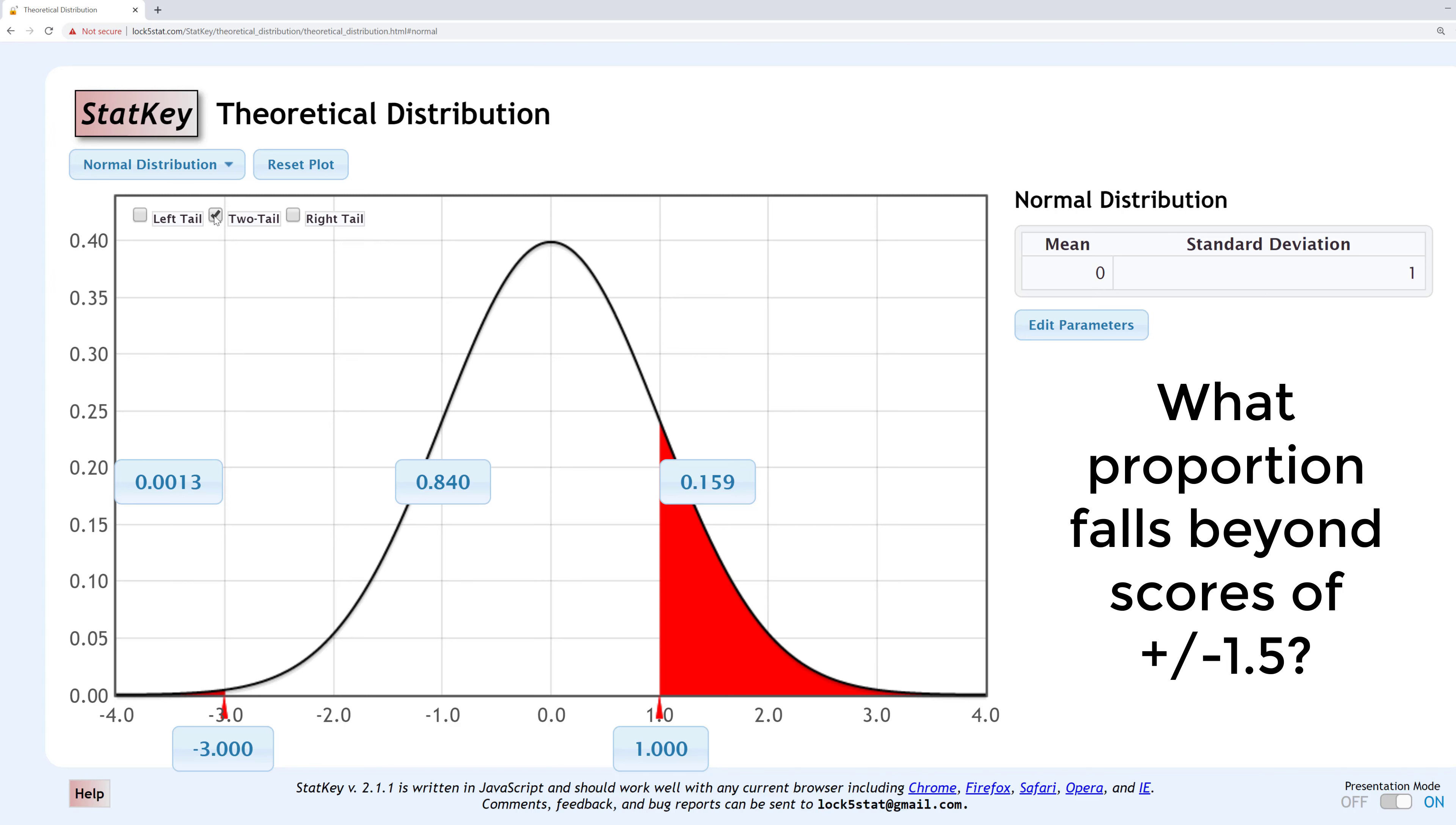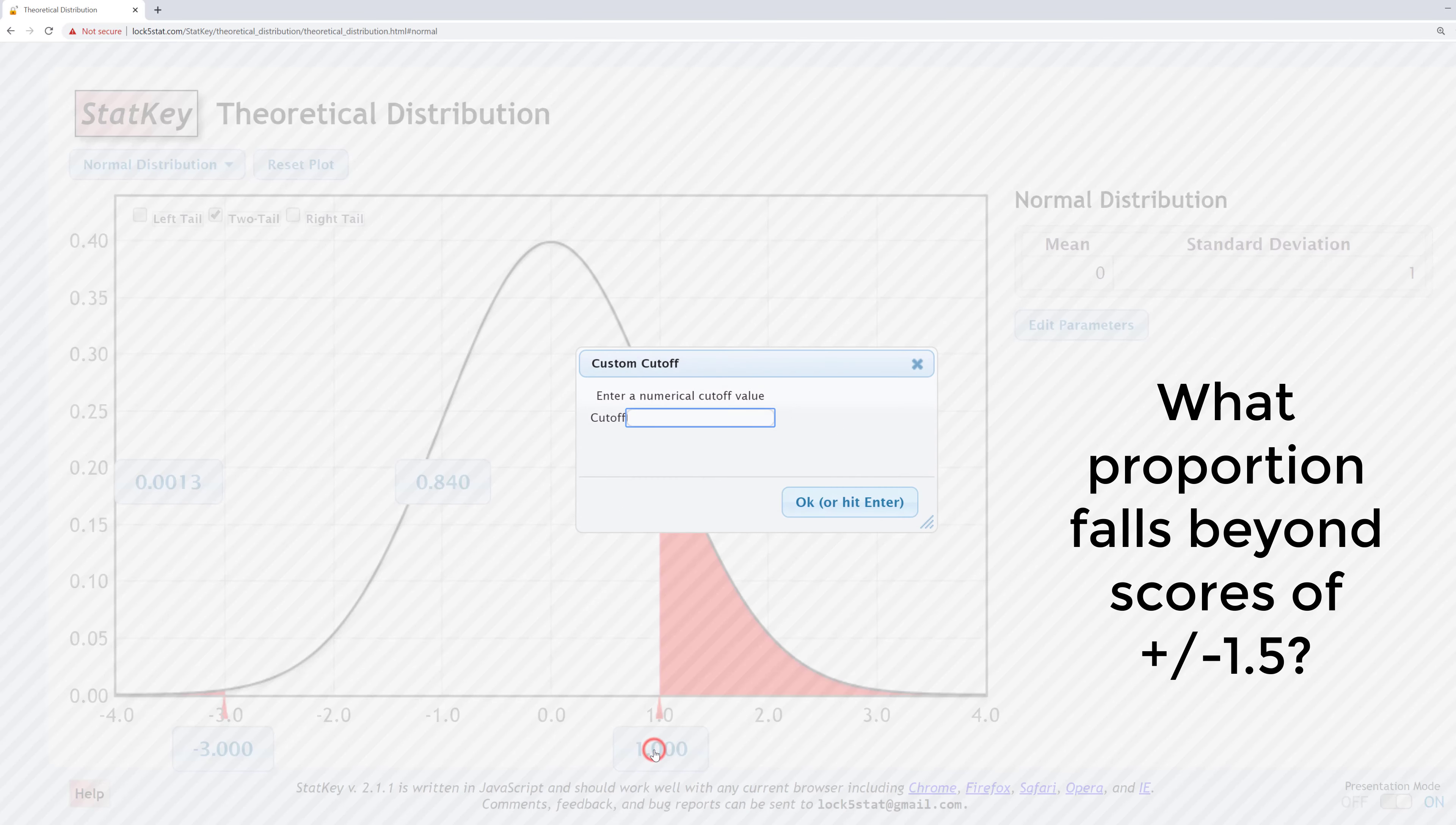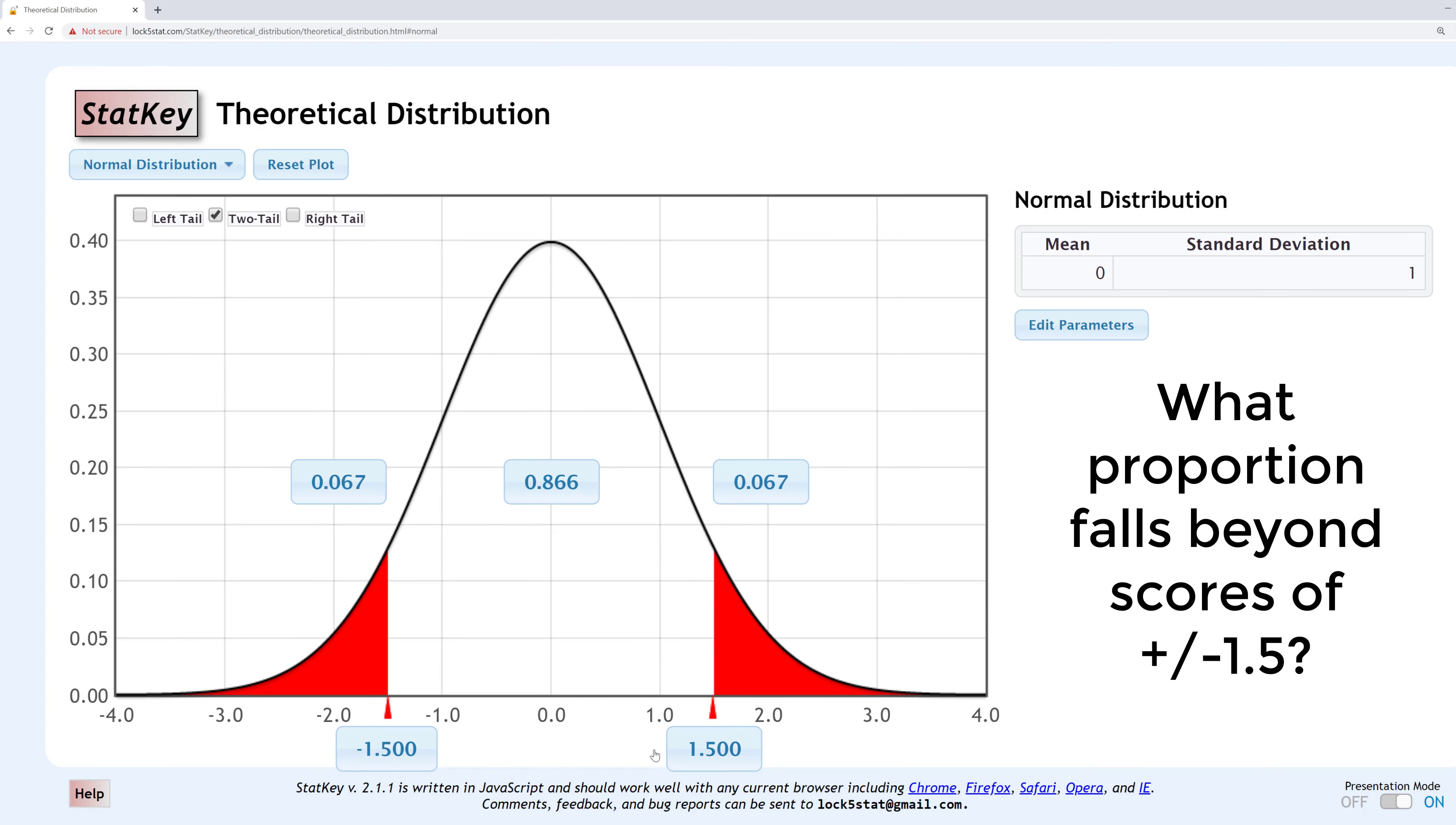We're looking for the area beyond plus and minus 1.5, which would be the area below negative 1.5 and the area above positive 1.5. You can change either number at the bottom here, but note that if you change the lower value, you would need to change that to negative 1.5. And if you change the upper value, you would need to change that to positive 1.5. I'll change the upper value now to positive 1.5 and you can see it automatically changed the lower value to negative 1.5.